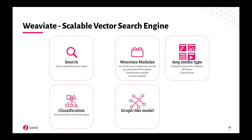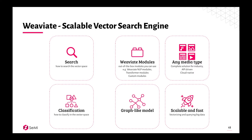Weaviate itself has a graph-like data model. In the demo, we use GraphQL — not only for the machine learning matching, but also to make traditional graph relations, and most importantly to mix and match them. Weaviate is designed to be scalable and fast, and we're constantly updating and improving it, so with each release Weaviate is a bit faster and a bit more scalable.